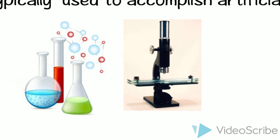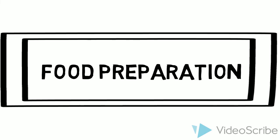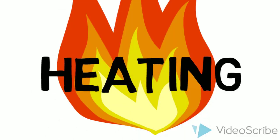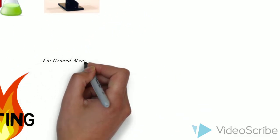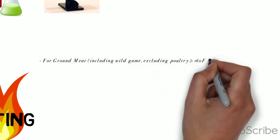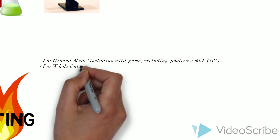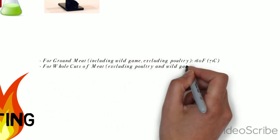Hello, so now I'm going to talk to you about an important prevention method against trichinosis, which is the proper food preparation. One of the first methods is the heating of the meat. So, as you can see here, for ground meat, including wild game, excluding poultry, the meat should be cooked to at least 71 degrees and they can be eaten immediately after cooking.